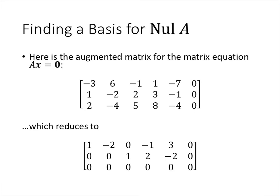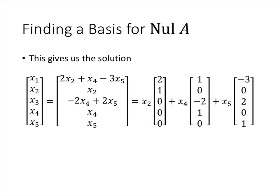Remember that what we're looking for is the set of all vectors so that A times x equals 0. We set up an augmented matrix for this matrix equation and reduce that matrix. When we look at the equations from that row reduced matrix, we see that there are three free variables, and that gives us three vectors in our spanning set. As it turns out, that spanning set is a basis.